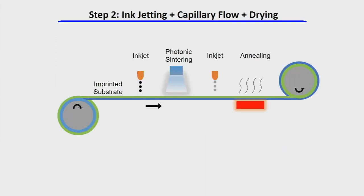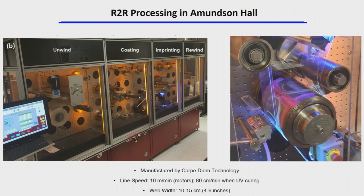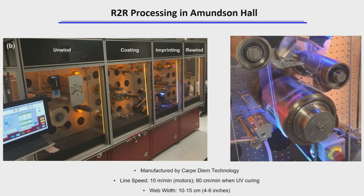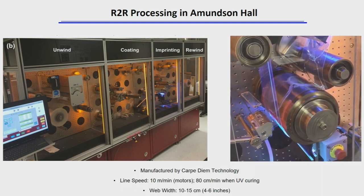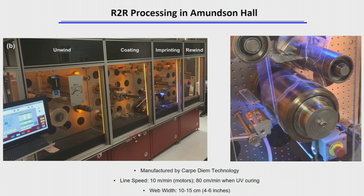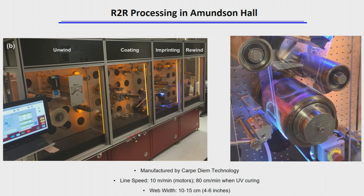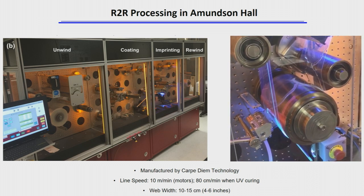The second step is to take that imprinted roll and now start delivering inks. So, again, metallic, semiconducting, and insulating inks, which we can dry using either blasts of light, using photonic sintering, or conventional ovens. And that is what ultimately builds up the devices. So we have a pilot scale line in Amundsen Hall, just across Washington Avenue here. This is the heart of the device. This is the wet web, so it's coated with a UV curable liquid. It comes onto the roll, which has a stamp on it, and underneath here there's a slab illuminator that's essentially solidifying or cross-linking the liquid, and so we're stripping off the patterned material on the other side. That's the imprinting line.